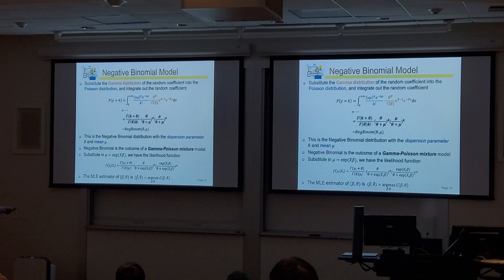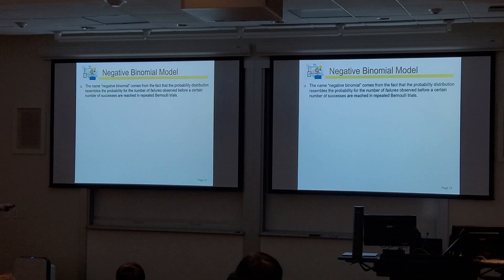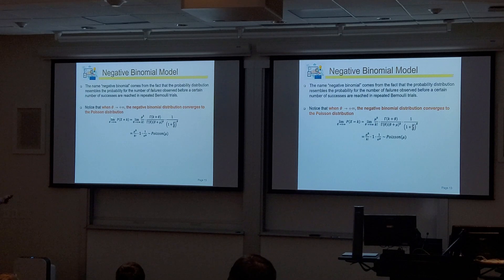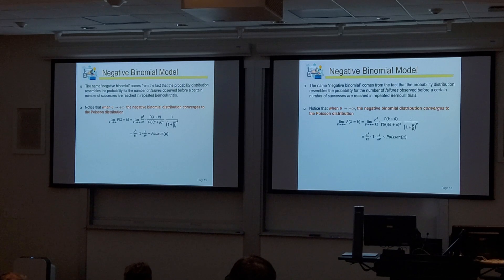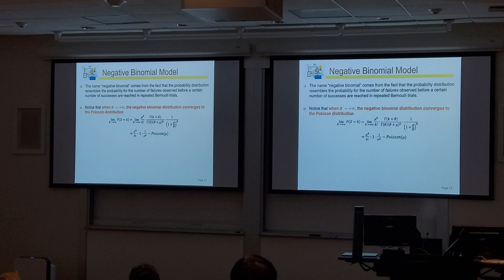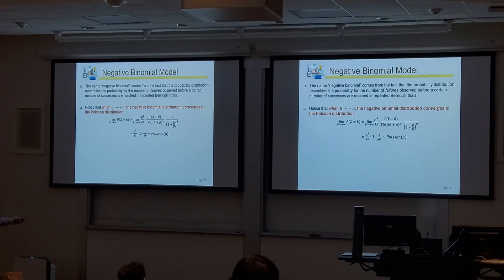This is the PDF of the negative binomial. What happens to this PDF when theta goes to positive infinity? We already know from the random effects discussion that it should reduce to Poisson. Let's verify: when theta goes to positive infinity, one term approaches zero, but it's raised to the power of theta — that's the tricky part.